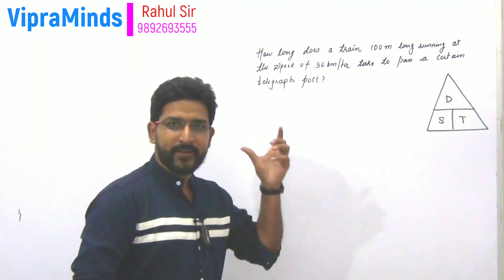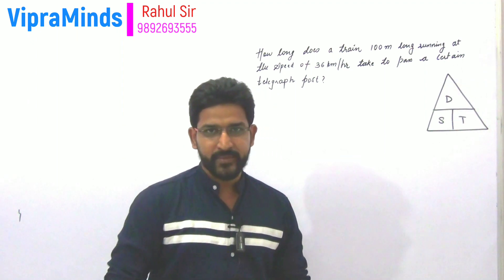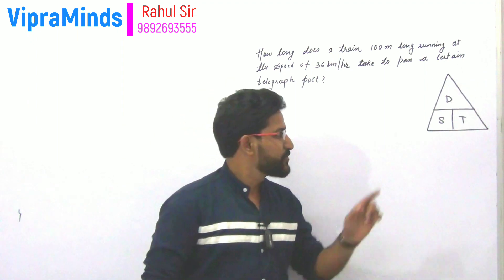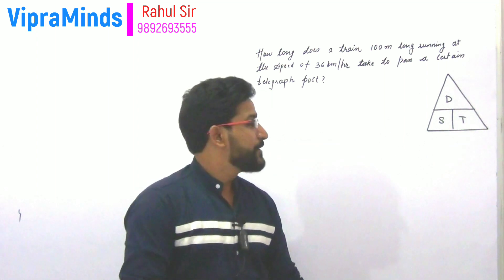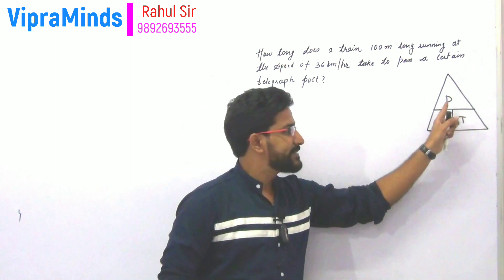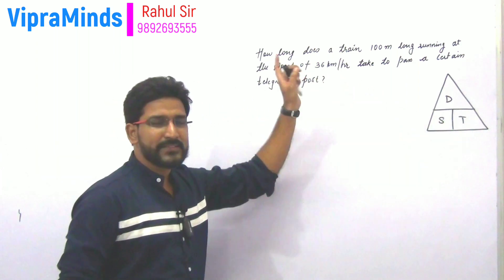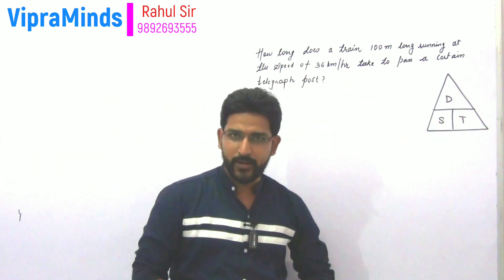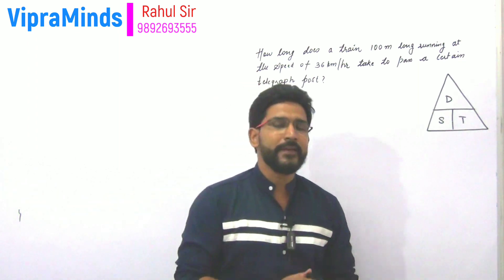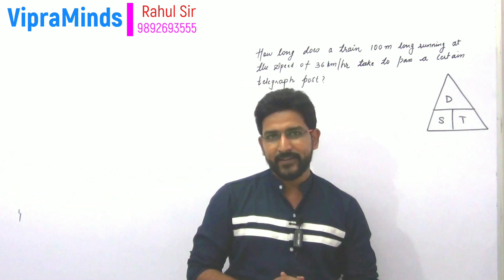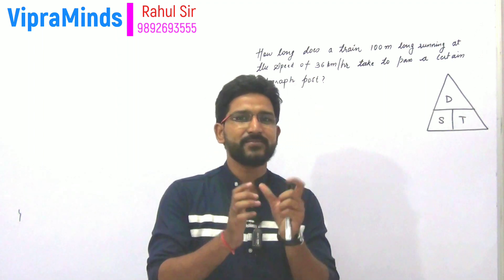Here we have the length of the train, speed, and time. So what is the formula? Using the triangle we already discussed, time equals distance divided by speed. Speed is directly given as 36 km per hour, but we need to find how much distance the train will travel when crossing the telegraph post — that is the main part of this question.